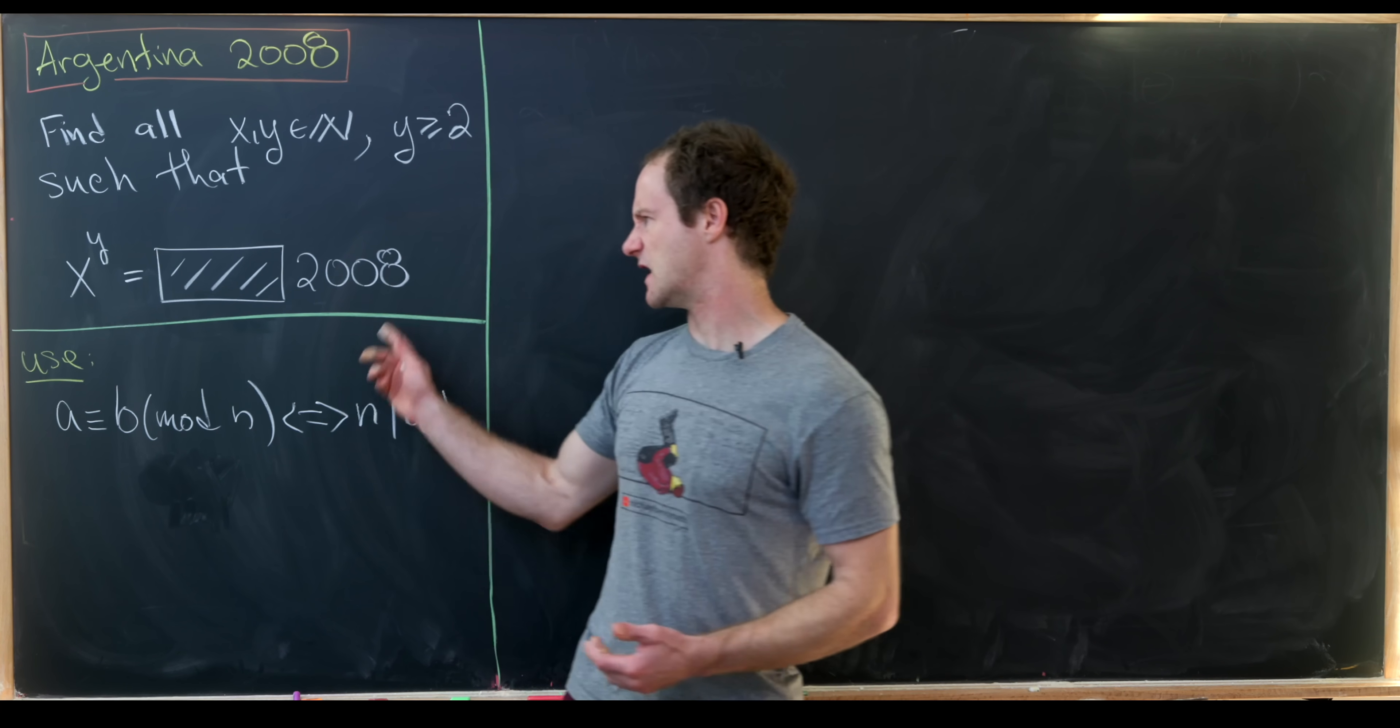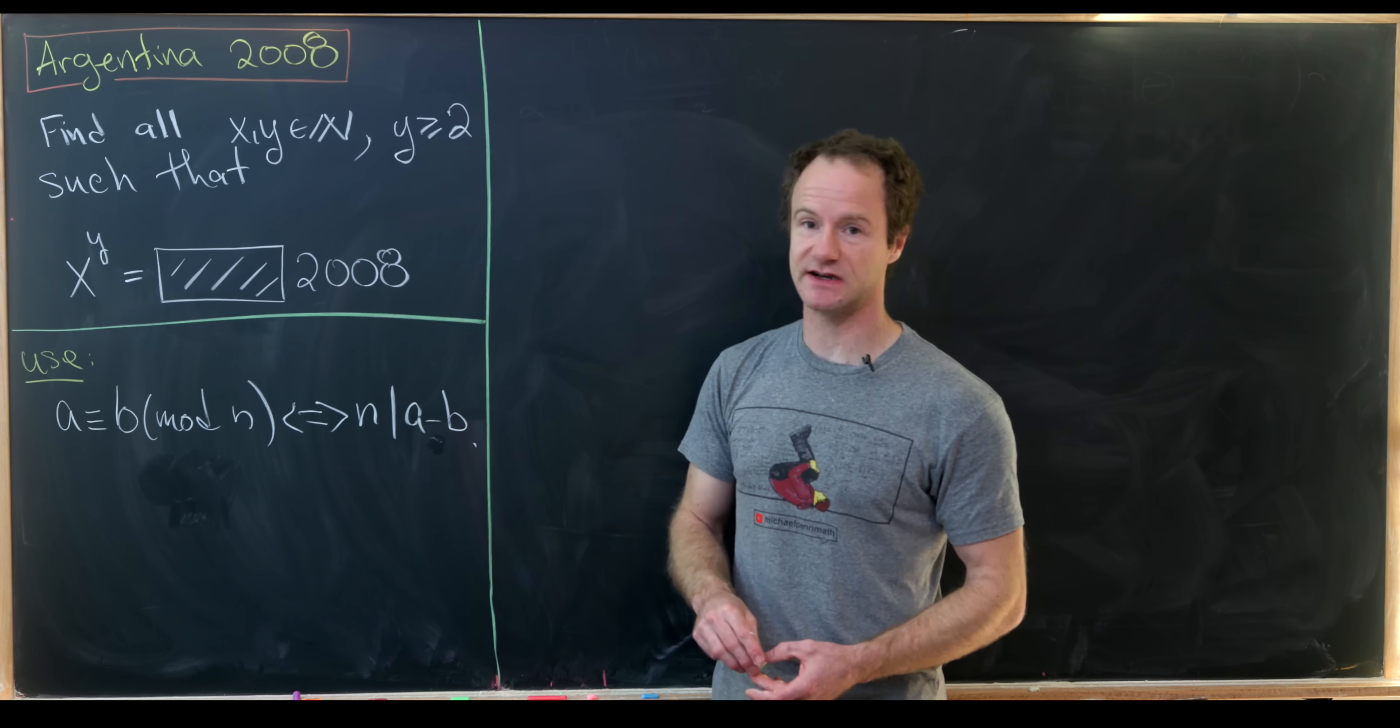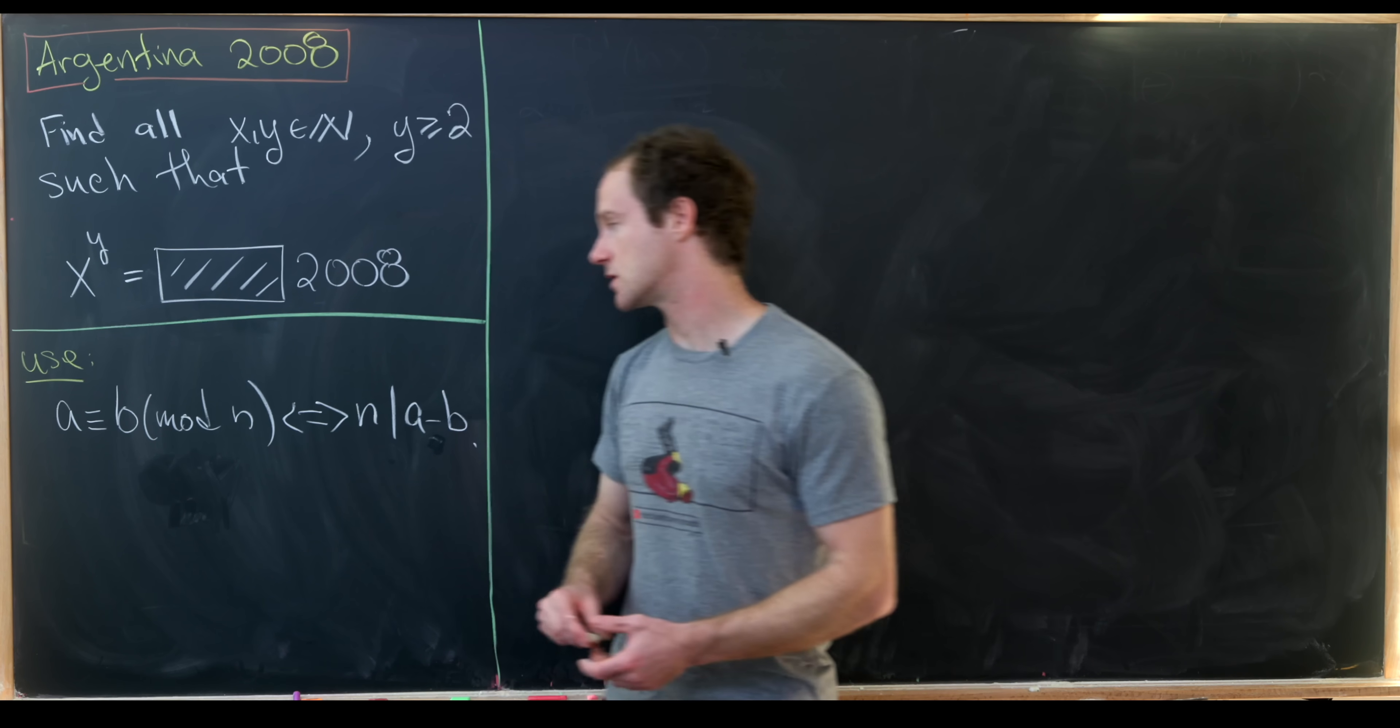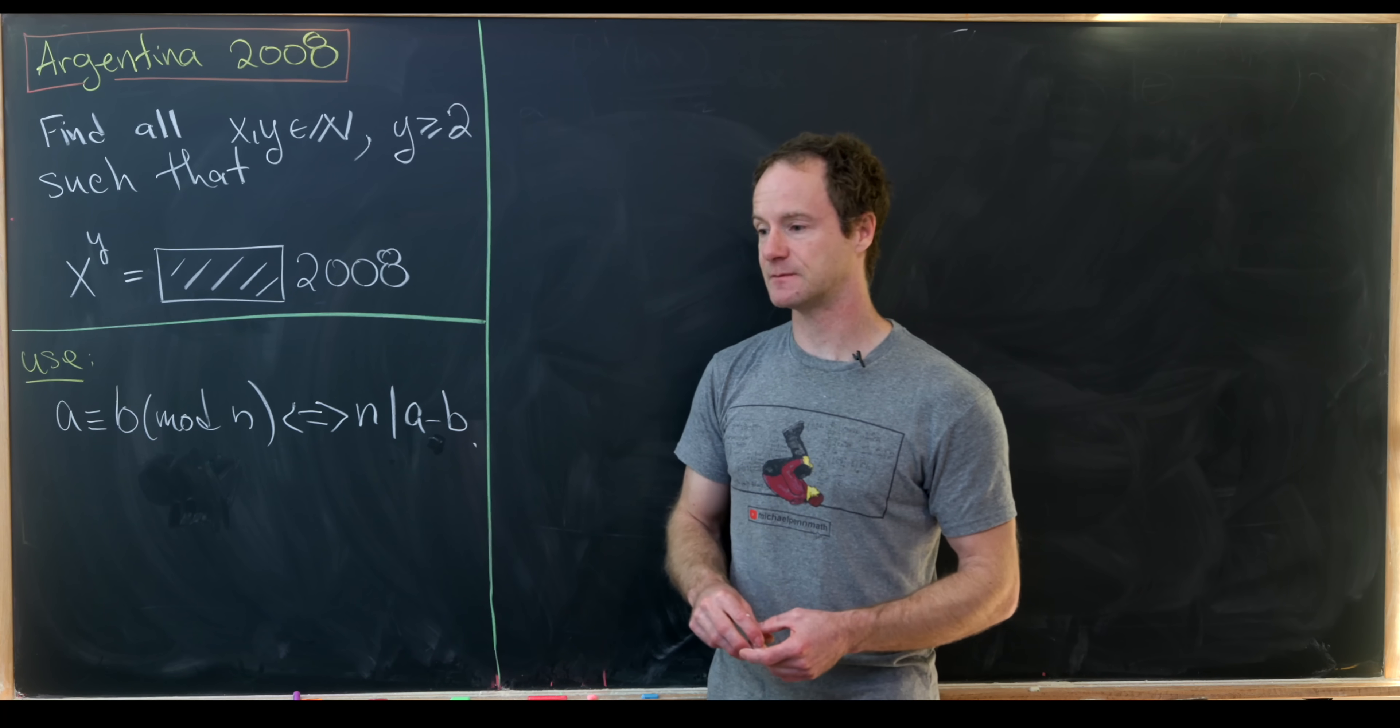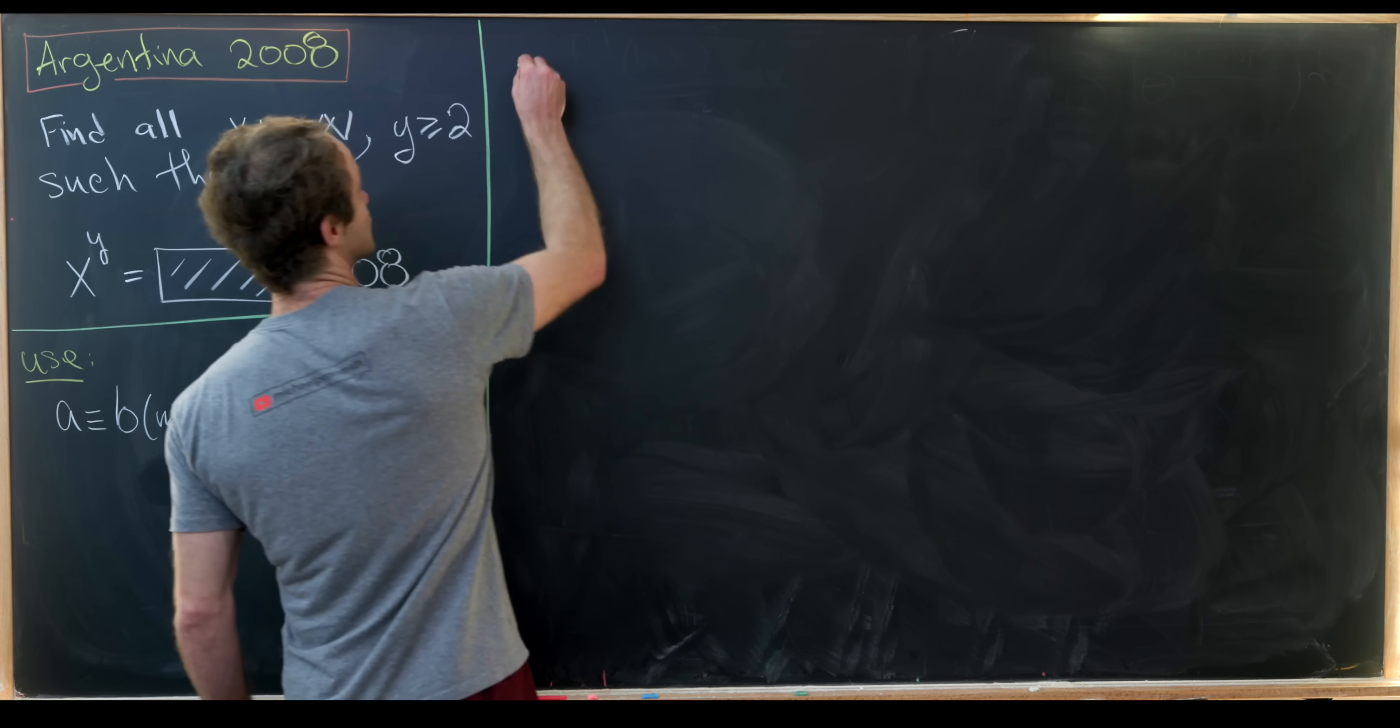So I've just written that in this form. We've got this big block of digits which we don't really care about and then it ends in 2008. We're going to use modular arithmetic here, so let's recall that we say a is congruent to b mod n if and only if n divides a minus b. I've got a whole course on number theory if you want to brush up on that kind of stuff.